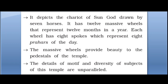The temple depicts the chariot of the Sun God drawn by seven horses. It has 12 massive wheels which represent the 12 months in a year. Each wheel has 8 spokes which represent the 8 prayers of the day.